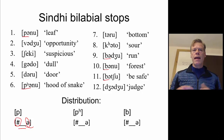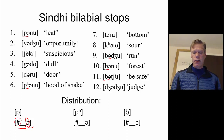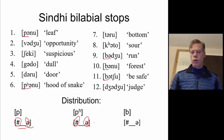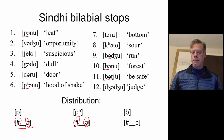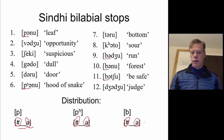In the second one, we've got the aspirated P, and again we see that it occurs at the beginning of a word and before schwa. Then finally, when we look at the environments for the three instances of B, we see that it also occurs at the beginning of a word and before schwa.